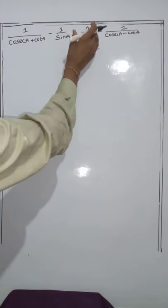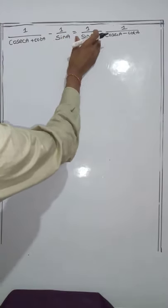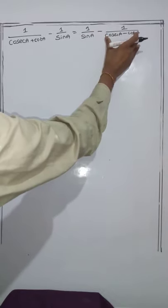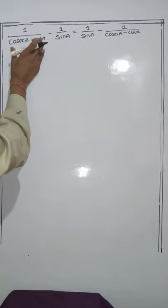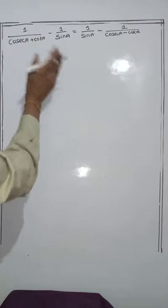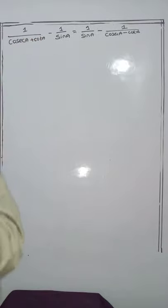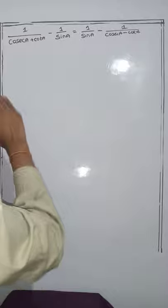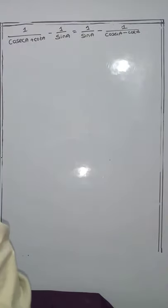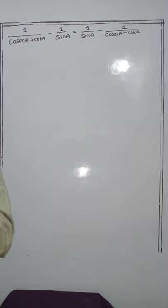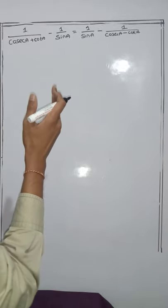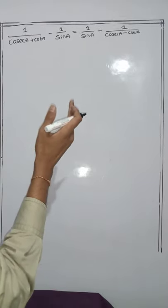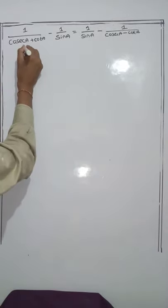Here you are having a sin term, and here also you are having a sin term. Here you are having cosec A minus cot A, and here also you are having cosec A minus cot A. So we are going for transposition — all the sin terms to one side, and cosec A plus cot A and cosec A minus cot A to the other side.